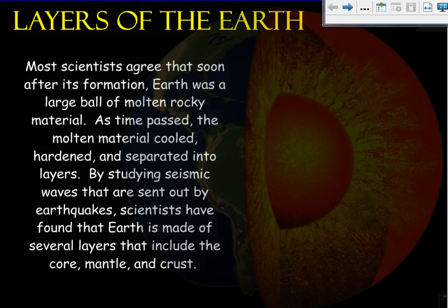Most scientists agree that soon after its formation, Earth was a large ball of molten, rocky material. As time passed, the molten material cooled, hardened, and separated into layers. By studying seismic waves that are sent out by earthquakes, scientists have found that Earth is made of several layers that include the core, mantle, and the crust.